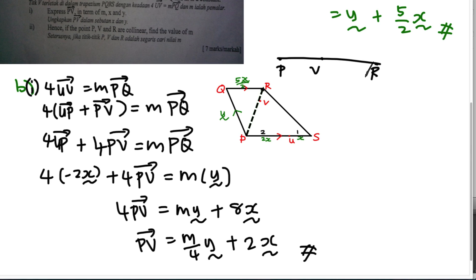You can write the collinear equation in different forms: PV = lambda·VR or PV = lambda·PR. I'll use PV = lambda·PR because I already have PR from Part A. Lambda is the unknown ratio — it could be 2/3, 4/5, or anything.